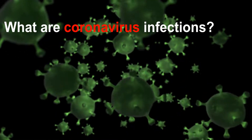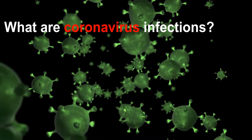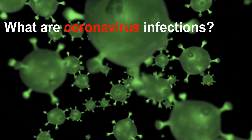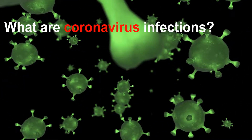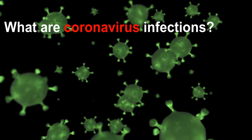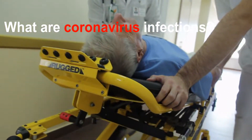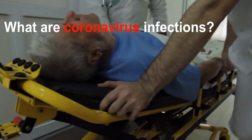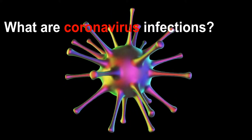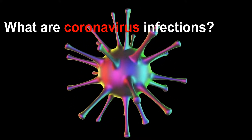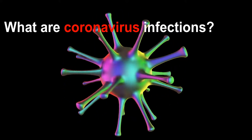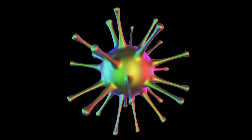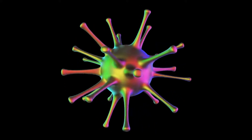What are coronavirus infections? Coronaviruses are a group of common viruses. They are named for the crown-like spikes on the surface of the virus. Some coronaviruses only affect animals, but others can also affect humans. Most people get infected with human coronaviruses at some time in their life. They usually cause mild to moderate upper respiratory infections, like the common cold, but they can also cause more severe illnesses such as bronchitis and pneumonia.